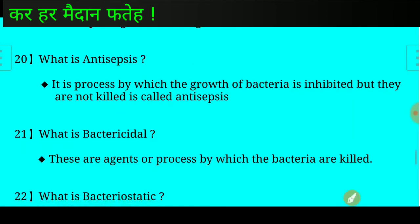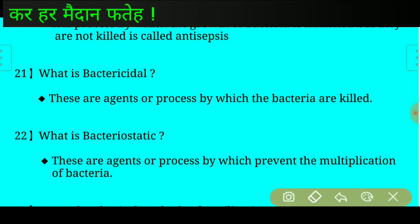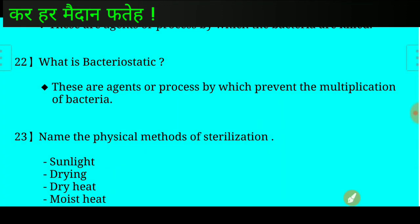Question number twenty-one: What is bactericidal? Question number twenty-two: What is bacteriostatic? Answer: These are agents or processes by which the multiplication of bacteria is prevented. This is called bacteriostatic.